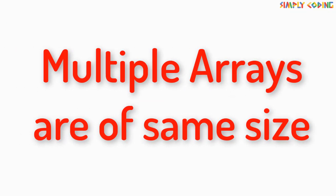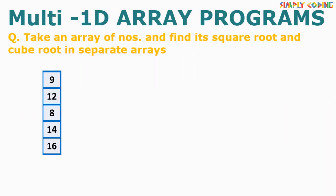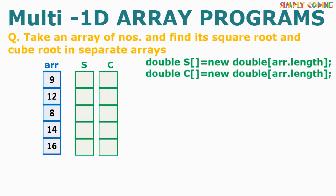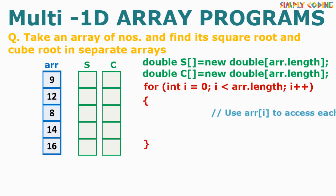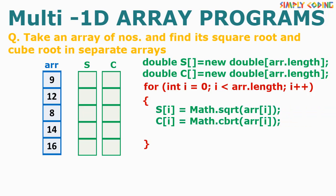The first program in the same-size category is to take an array of numbers and store the square root and cube root of those numbers in two other arrays. Considering array 'arr' as our input array, we declare two other arrays of type double since the output will have decimal values. We then take our traversal loop, and inside the loop use Math.sqrt to find the square root and Math.cbrt to find the cube root, storing them in the new arrays. We are able to use the same index for both arrays.